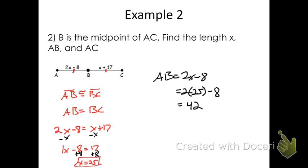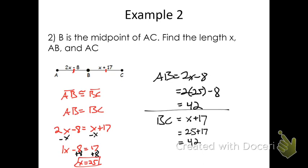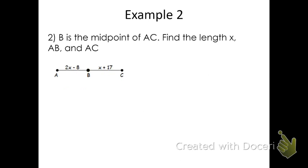Let's do the same thing for BC — it should get the same length, because we know AB is congruent to BC. BC can be represented with the expression X plus 17, and we've already said X is 25. So 25 plus 17 is 42. With an X value of 25, both AB and BC have a length of 42 units, which makes them congruent. We're confirming that B is the midpoint with that.